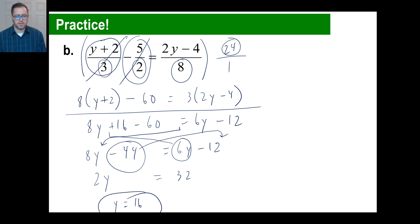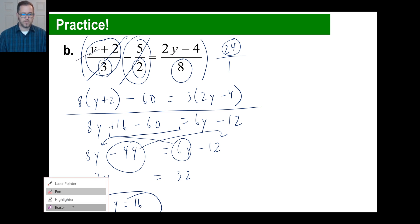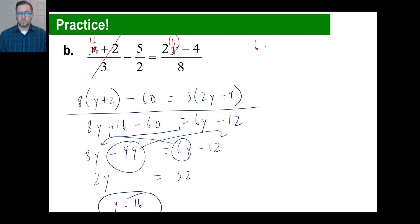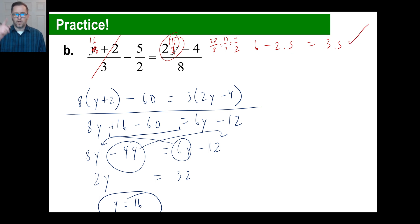Combine: 8y plus 16 minus 60 — that's 16 minus 60 which is negative 44 — equals 6y minus 12. Move 6y over: that leaves 2y. Move negative 44: 44 minus 12 is 32. So 2y equals 32, meaning y equals 16. Let's check: plug in 16. 16 plus 2 over 3 is 18 over 3, which is 6. Minus 5 halves, which is 2.5. On the right: 2 times 16 minus 4 is 32 minus 4 is 28. 28 divided by 8 is 3.5. And 6 minus 2.5 is 3.5 — it checks out! See you all next time. Take care.